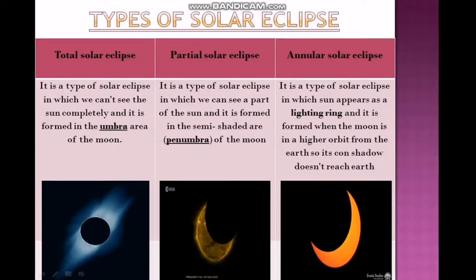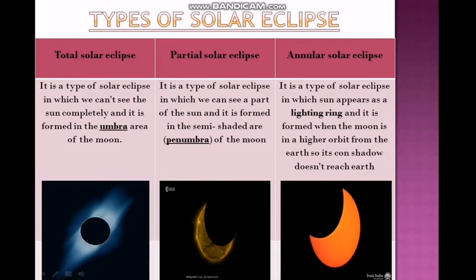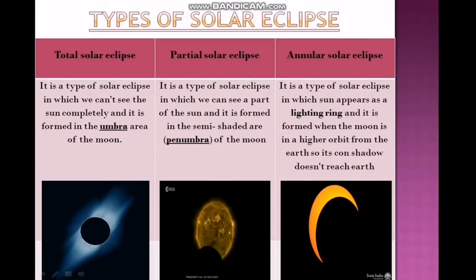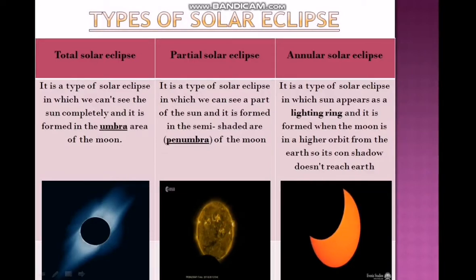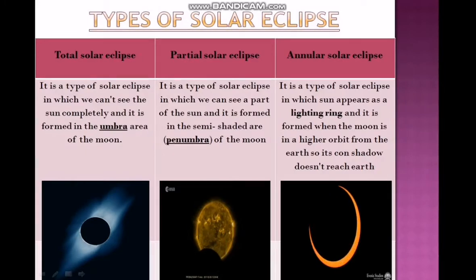The third type: annular solar eclipse. It is a type of solar eclipse in which the Sun appears as a lighted ring, and it is formed when the moon is in a higher orbit from the Earth, so its cone shadow doesn't reach the Earth.